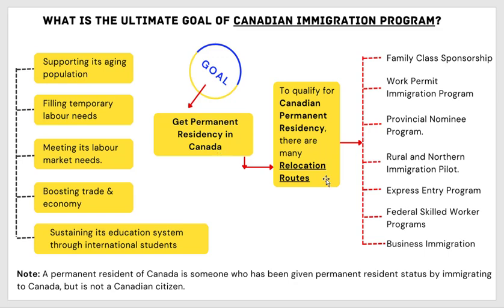For you to get this permanent residence in Canada, there are a lot of immigration routes or pathways you can use. Number one is the family class route. Number two is the work permit immigration program. Number three is the PNP. Number four is the rural northern pilot program. Number five is the express entry skilled worker program, business immigration program, and a lot more.